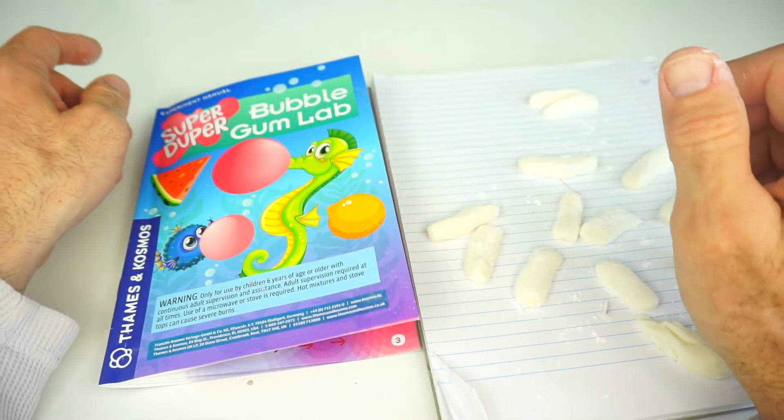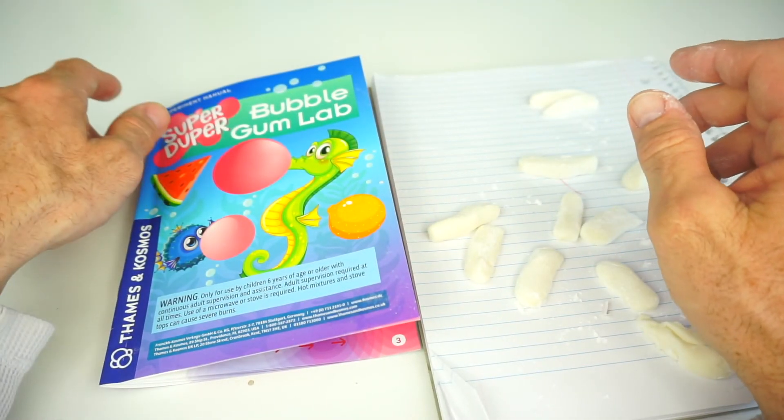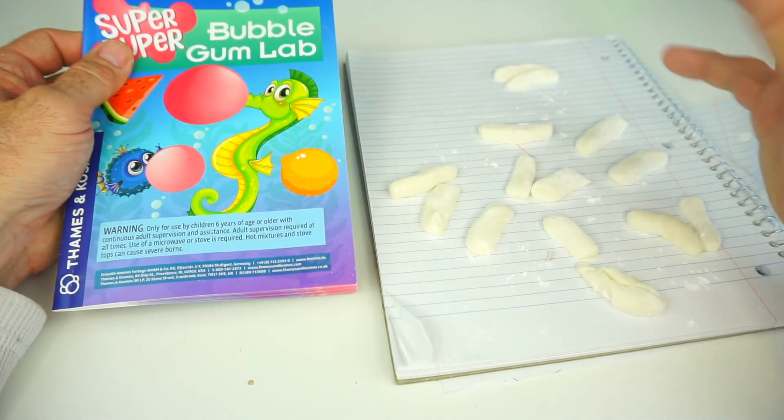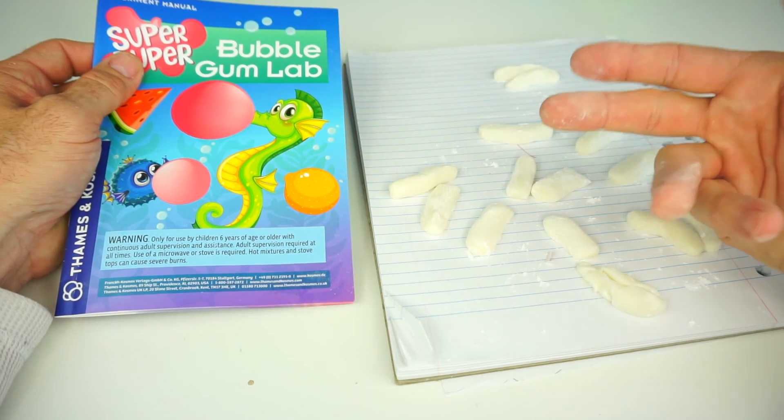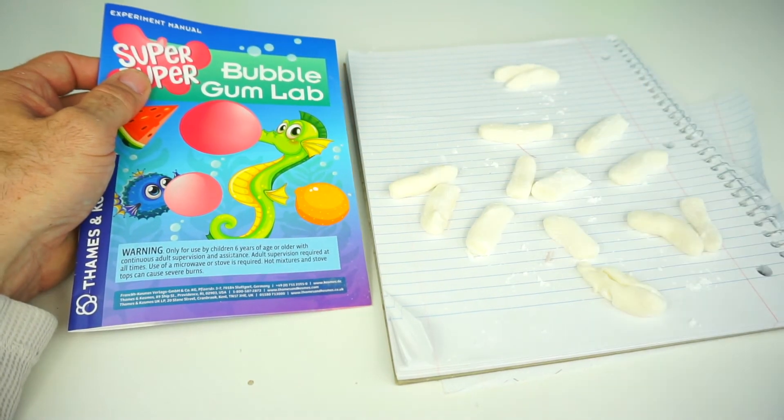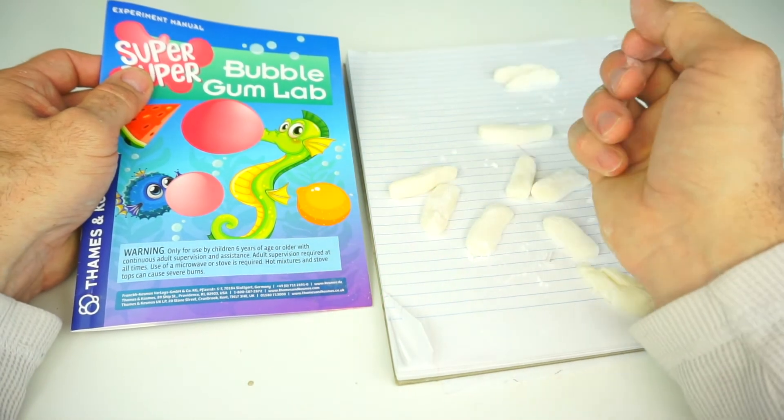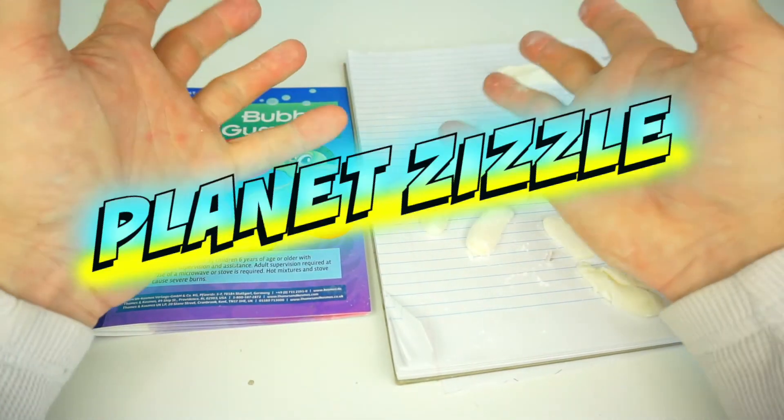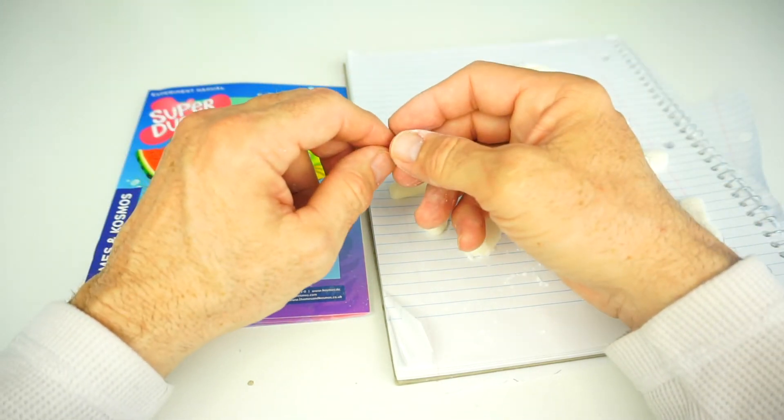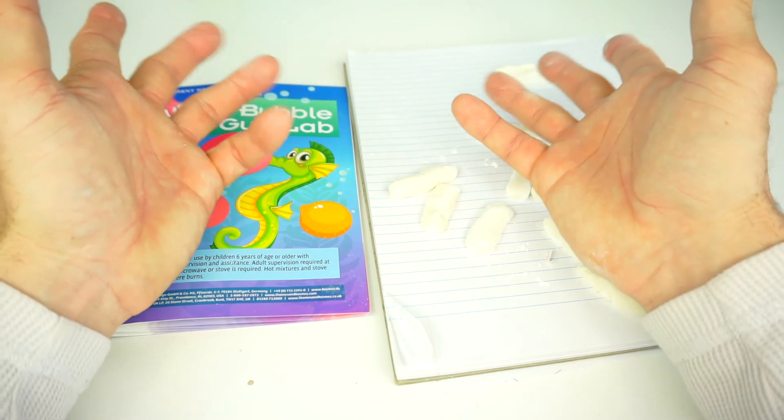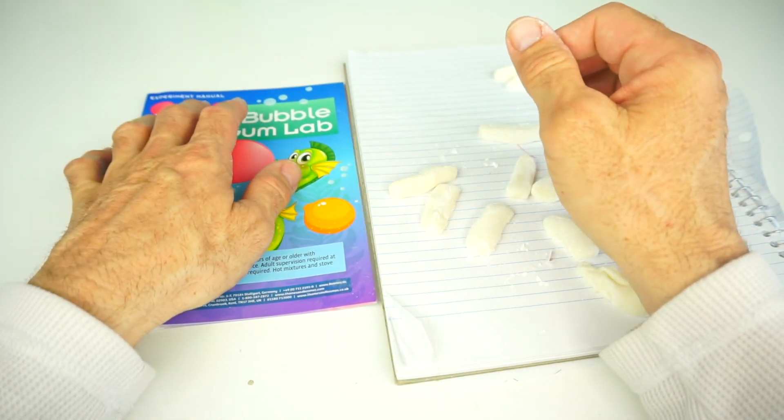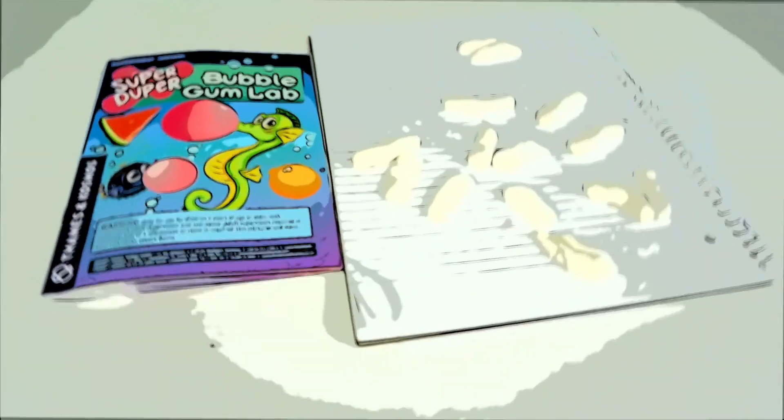Alright kids, that's it for this video with the Super Duper Bubble Gum Lab from Thames & Cosmos. And like I said, not all experiments will come out right the first time. So now I know what to do for my next batch of bubble gum. Don't forget to smash that like button, share this video with your friends, and come back to Planet Zizzle to keep the missions going. This is your Toy Commander signing off. And I will see you on our next mission. It's now time for me to blast off out of here. 3, 2, 1